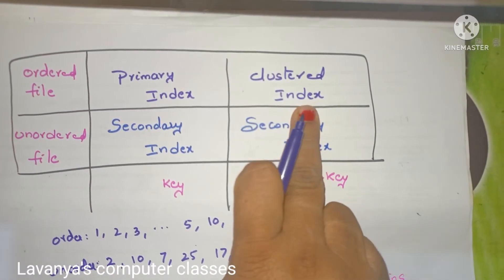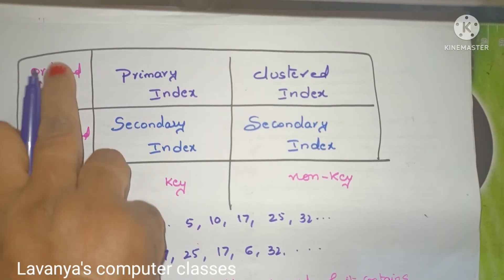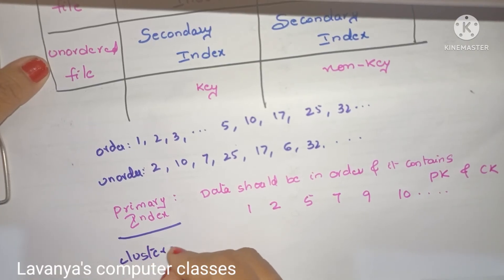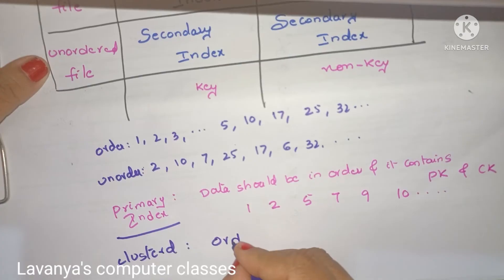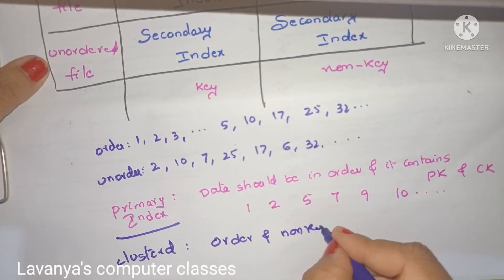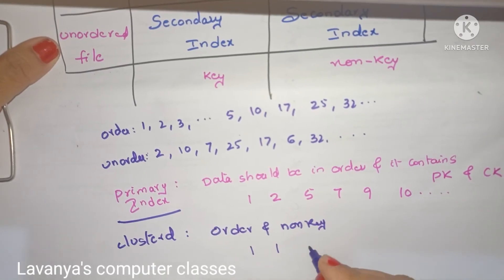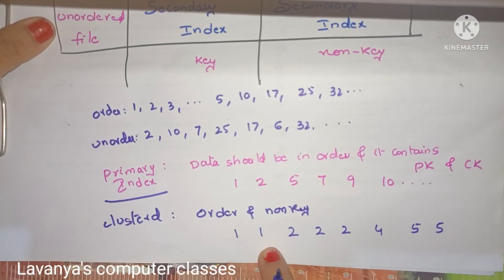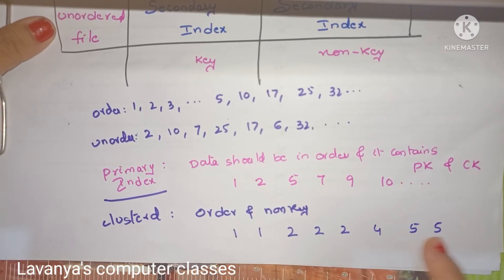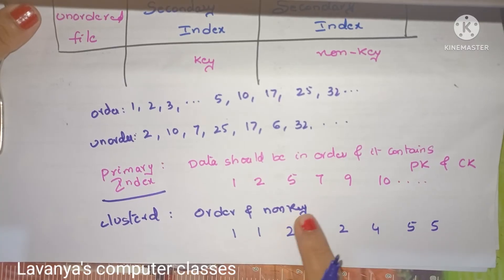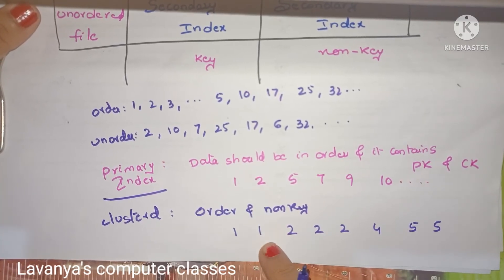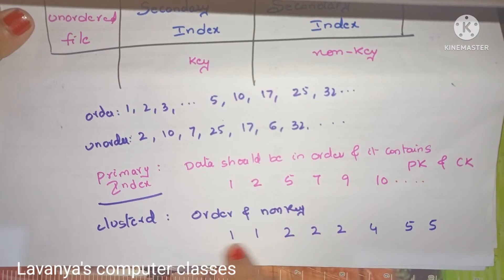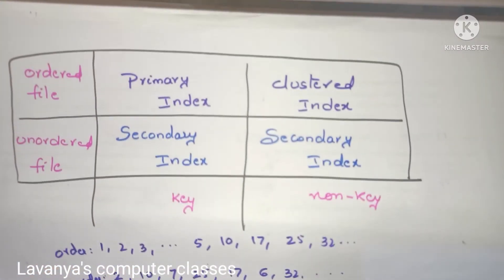The next type is clustered index. A clustered index is a combination of ordered file and non-key. In a clustered index, the data should be in order but it does not contain a unique key. For example, values like 1, 1, 2, 2, 2, 4, 5, 5 — values are repeated, so 1 appears twice, 2 appears three times, 5 appears twice. It is not a primary key or candidate key, so this is an example of a clustered index.